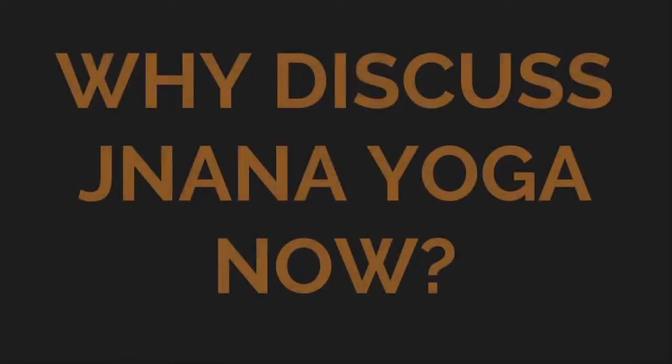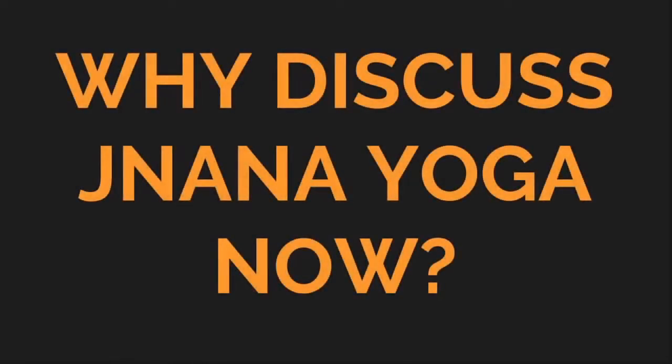Why discuss Jnana Yoga? Because Jnana gives Vairagya. Whatever subject matter Krishna has discussed, chapter 2 is a summary of the whole Bhagavad Gita, and the rest of the chapters are elaborations, particularly up to the 17th chapter. The 18th chapter is a conclusion.